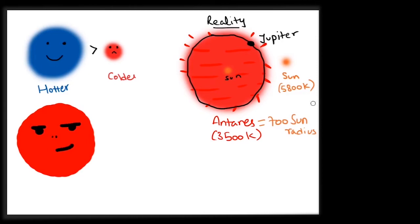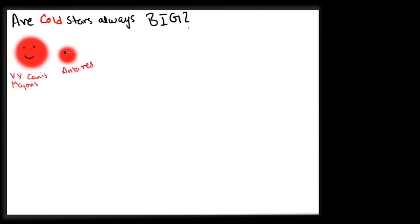The M-type star, Vy Canis Majoris, is one of the biggest stars in the known universe. But then, are colder stars always bigger? Well, no.